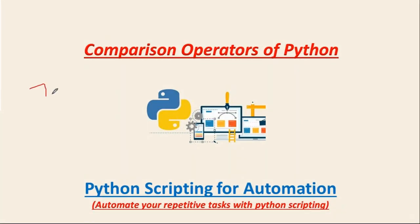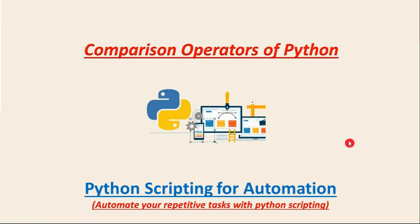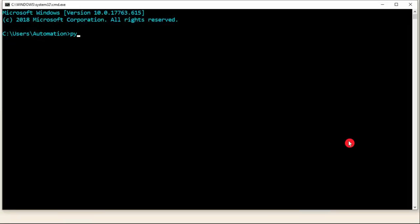Let's say you have numbers three and four. If you check three greater than four, we know that three is not greater than four, so you get the result false. You are providing input as a number value, and output will be either true or false. Let me open my Python terminal so I can explain more easily.